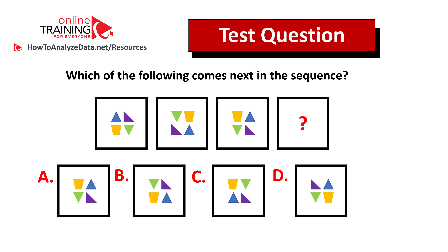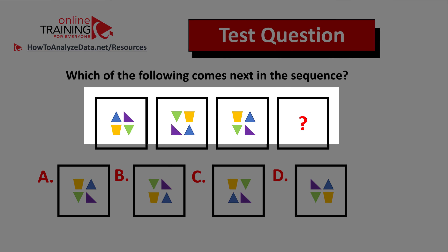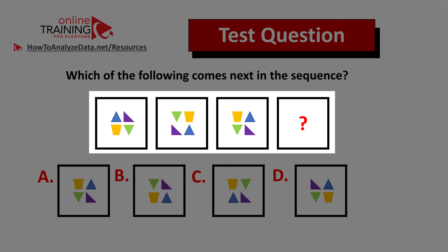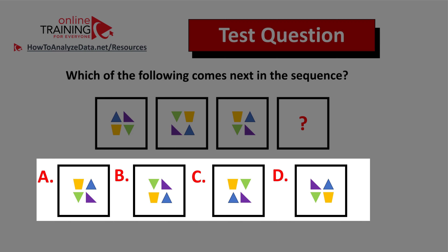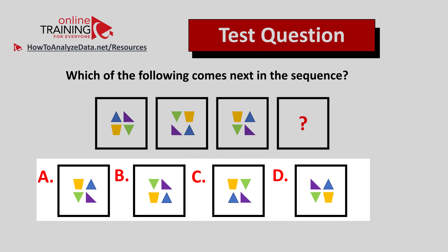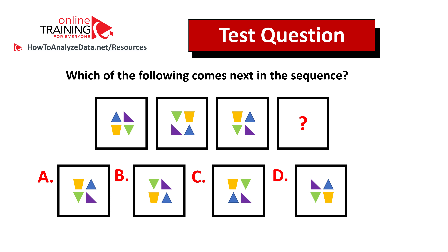Here's a question for you to practice your skills. Which of the following comes next in the sequence? You are presented with a sequence of four different squares, each containing smaller shapes, with square four marked with a question mark. You have four possible choices: A, B, C, and D. Please give yourself 10 to 15 seconds. If you figured out the answer, feel free to post it in the comment section along with your rationale. I'll also post a detailed answer in my future videos, so make sure to subscribe. Thanks for participating and good luck!